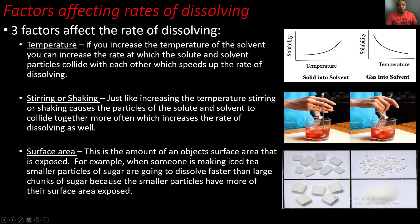There are three main factors that affect the rate of dissolving. The first is temperature. If you increase the temperature of the solvent, you increase the rate at which the solute and solvent particles collide, which speeds up the rate of dissolving. For example, say we had a pot of boiling water and added salt into it. Since the water is already boiling, its particles are moving fast, so the salt particles will be moving fast as well. The water and salt particles will collide more often, which causes the salt to dissolve faster.